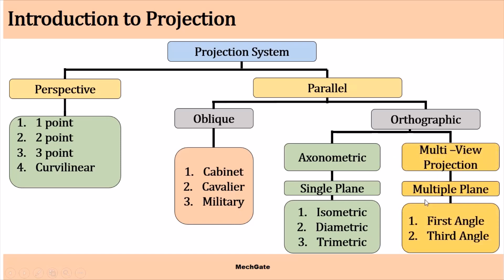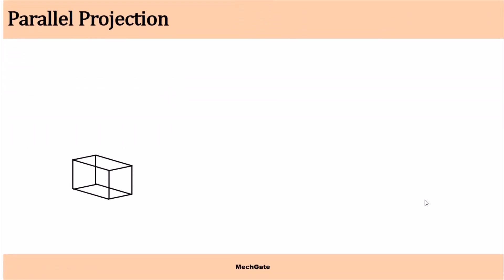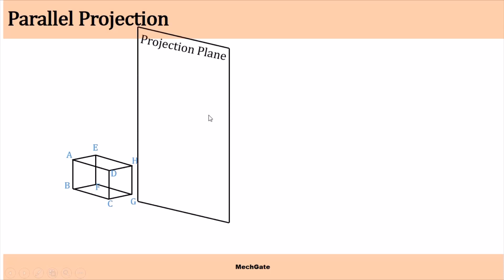First of all, what is parallel projection? Let's say an object is there and I have to draw the projection of this object on some projection plane. An observer is observing this object from infinite distance, so the projector lines are parallel to each other. That is why it is called a parallel projection — because the projector lines remain parallel to each other.